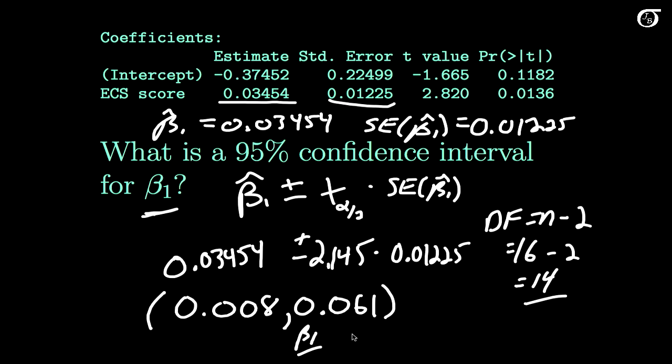Implying that we have some pretty solid evidence here that beta 1, the real slope, is in fact greater than 0 and there is an increasing trend, a real increasing trend. And we can test that more formally though with a hypothesis test.